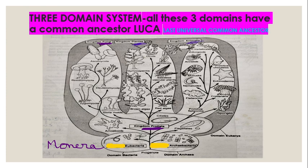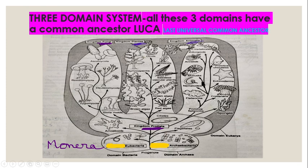Then a three domain system came into existence where these five kingdoms were merged. There is Domain Bacteria, Domain Archaea, and Domain Eukarya. Domain Bacteria is also known as Eubacteria. Domain Eukarya merges the kingdom Fungi, kingdom Plantae, and kingdom Animalia. So domain is a larger rank than kingdom. There were five kingdoms and now three domains, and all three domains have a common ancestor — the LUCA, or Last Universal Common Ancestor.